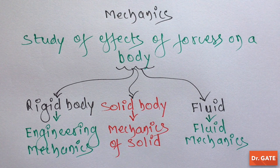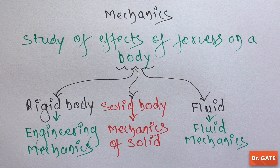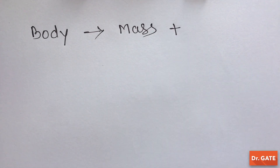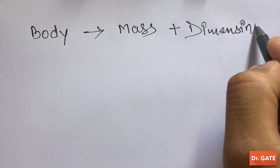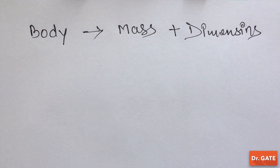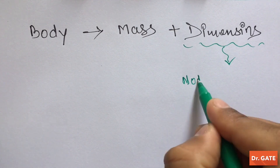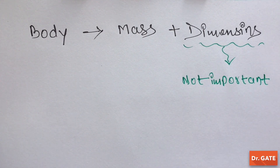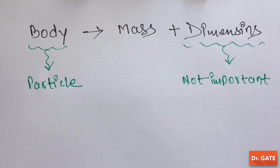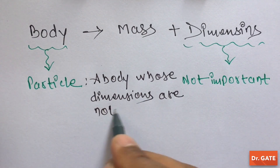So these three are the branches of Mechanics. We all know that every body contains some mass and it has its own dimensions. In many engineering analyses, the dimension of the body is not important. So for that analysis, the body is said to be a particle. So what is a particle? A body whose dimensions are not important.